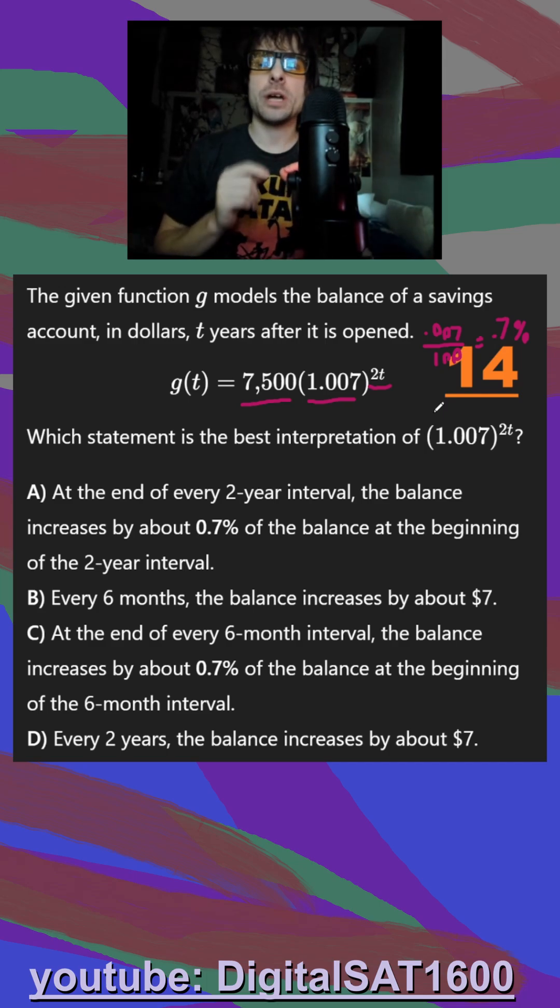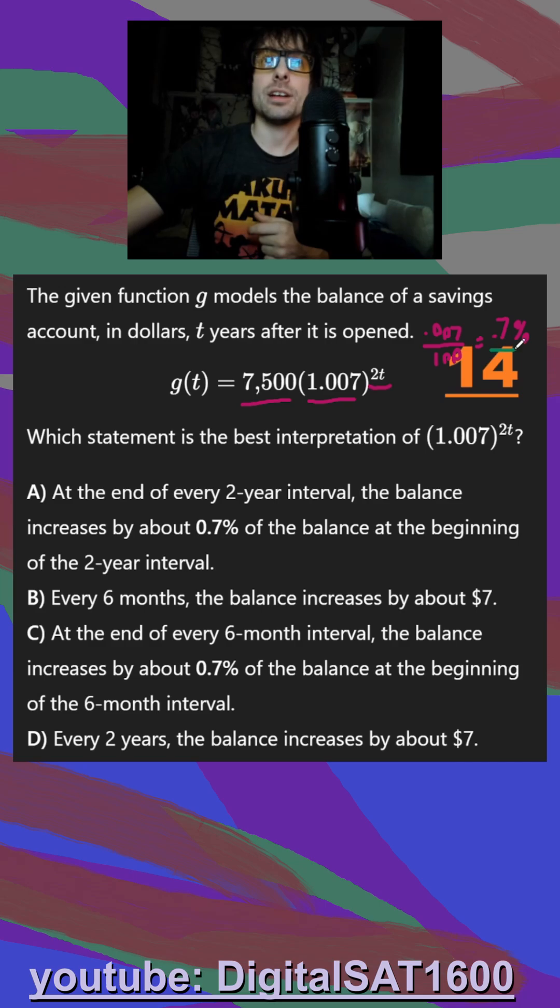We always want to try to imagine what amount of time would I have to plug in to make an increase of 0.7%. So if it was just t, it would be every one year is an increase of 0.7%. So what could I plug in for t to make this one?